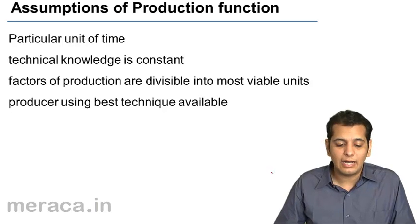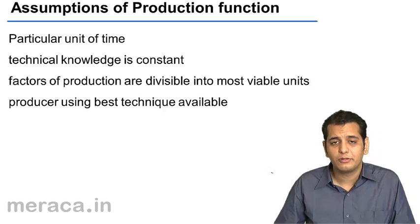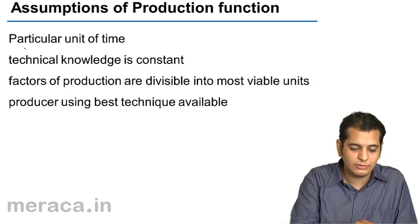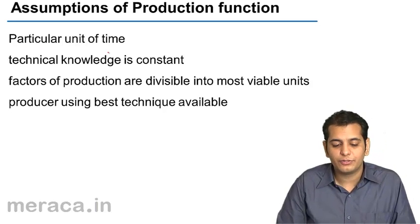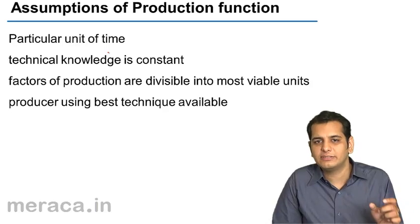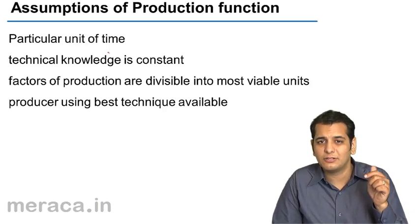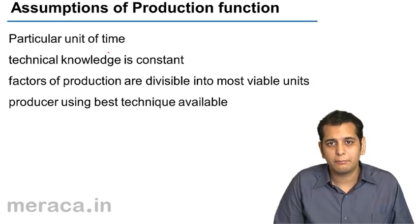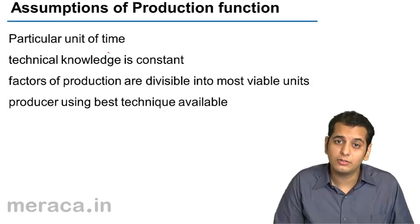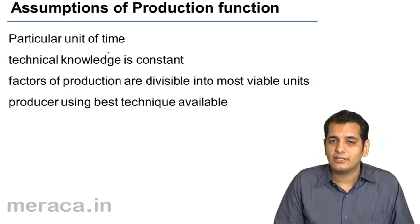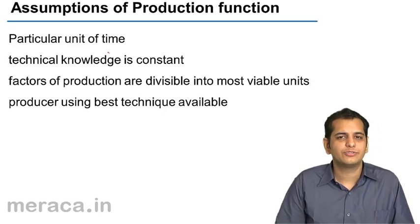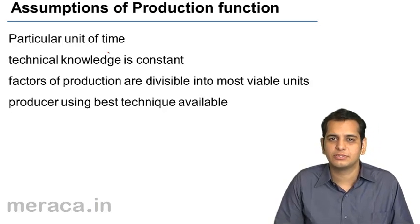Now, let's see what are the assumptions of production function. The first assumption is particular unit of time. Production function is always expressed in some unit of time — that is per day, per week, per month, per year. There has to be some unit of time in which the production function is expressed.